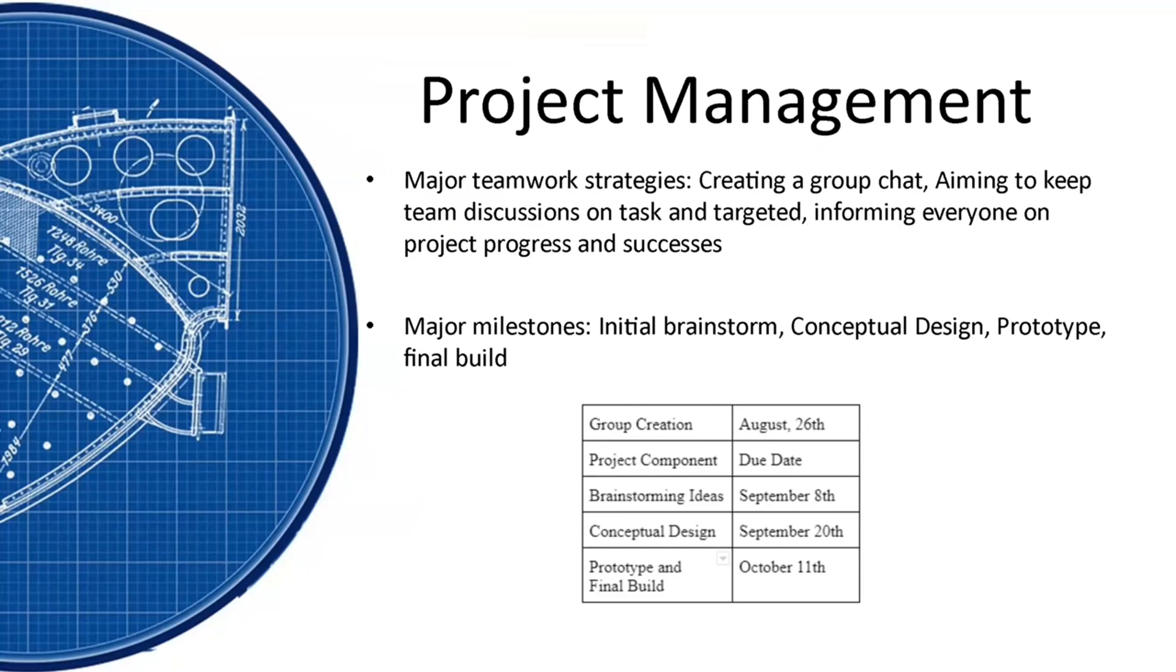The four major milestones we really used as a timeline for our project were the initial brainstorm, the conceptual design, the prototype, and the final build. All of these were due about two weeks apart in sequential order and as you can see in the chart below, they were all due before the end of the project.